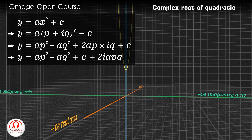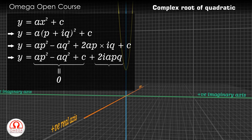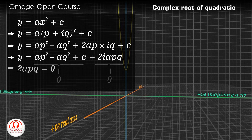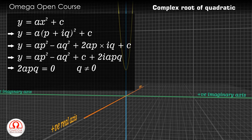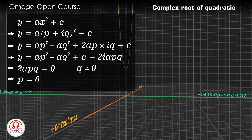This expression can be 0 only when both its real and imaginary parts are separately 0. Simplifying, we get ap² − aq² + 2apiq + c = 0. That means 2apq must be 0. But we are finding a complex root, therefore q cannot be 0. And hence, if this equation has a complex root, its real part, that is p, must be 0.